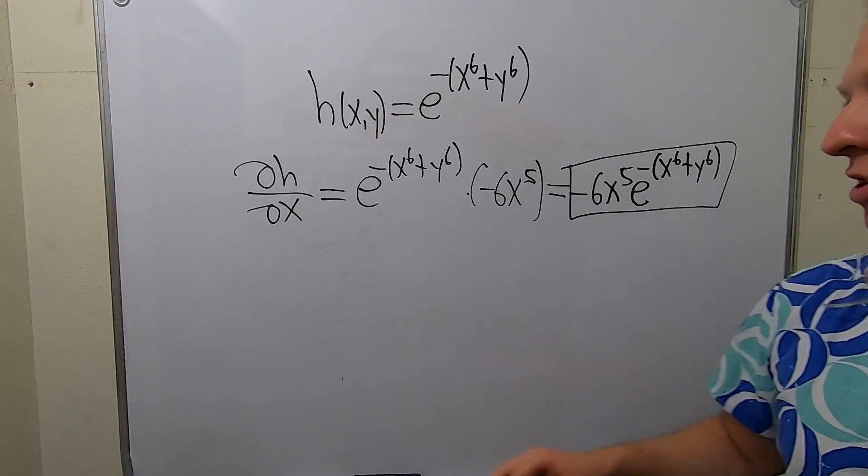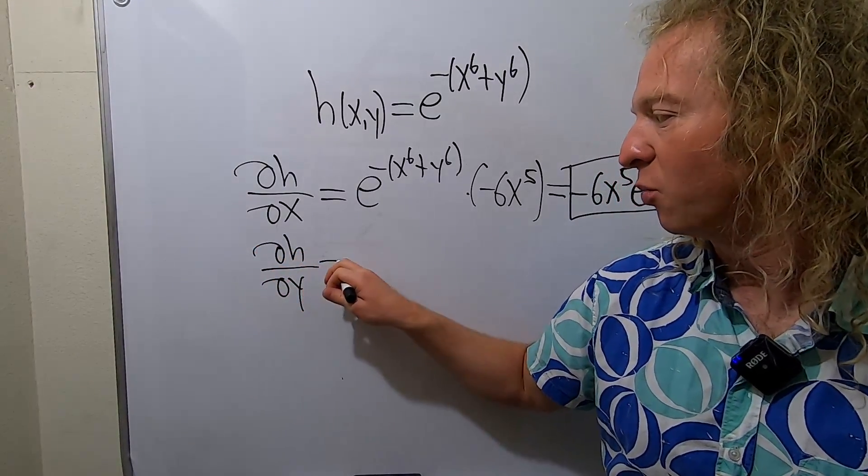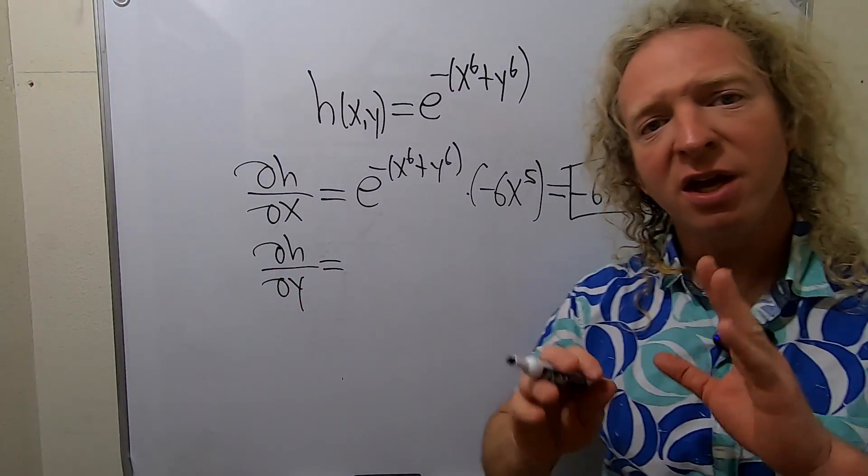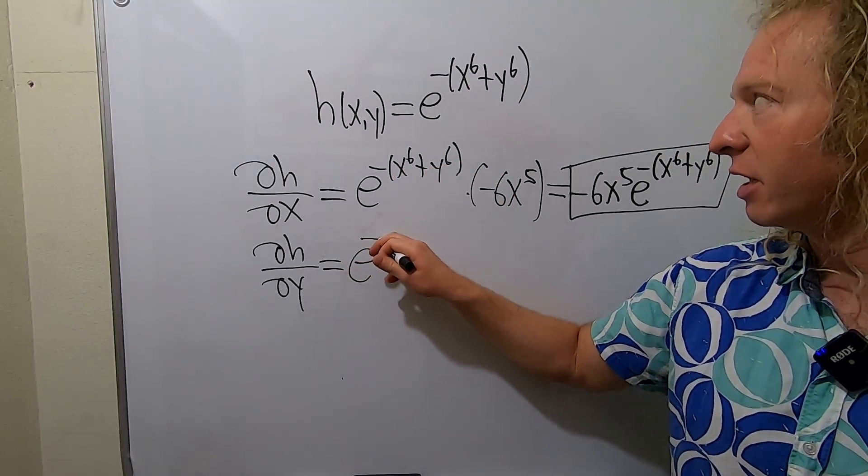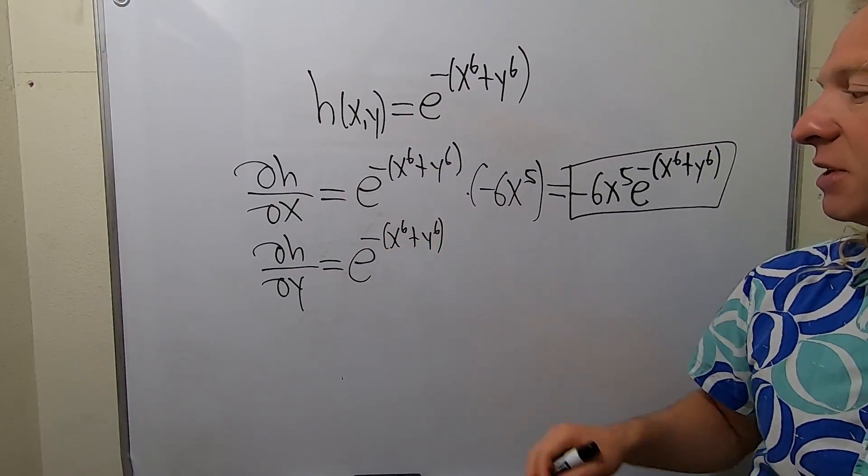We're going to do ∂H/∂Y, the partial derivative of H with respect to Y. Same thing. Chain rule again. This will be e^(-x^6 + y^6).